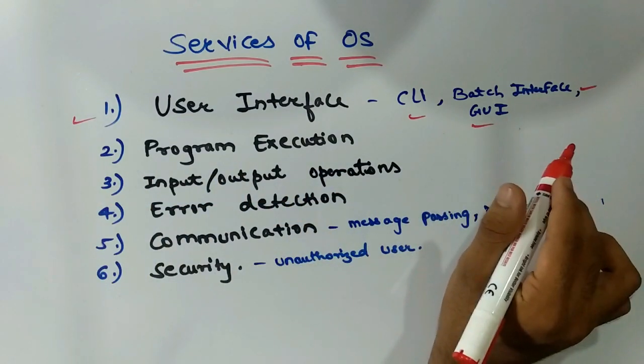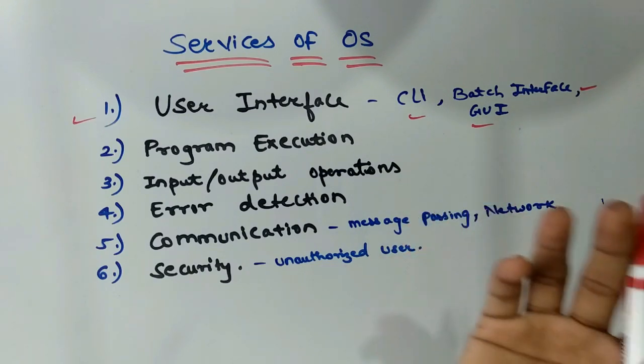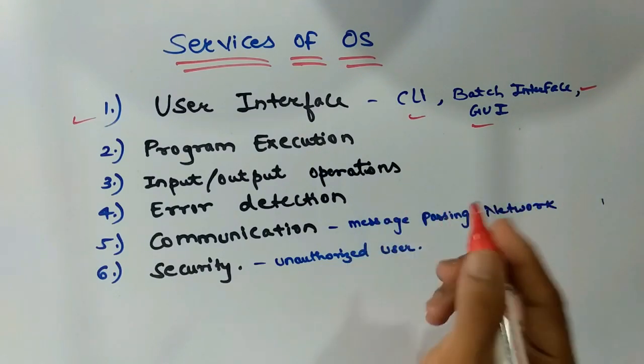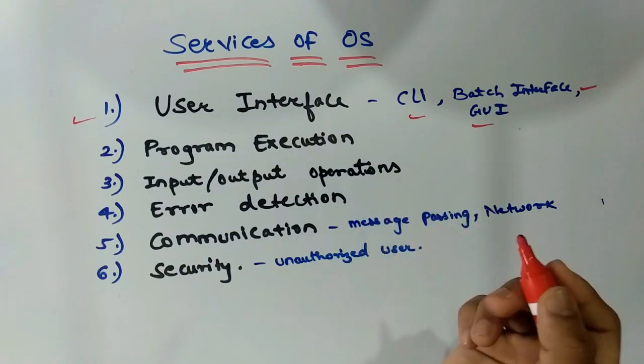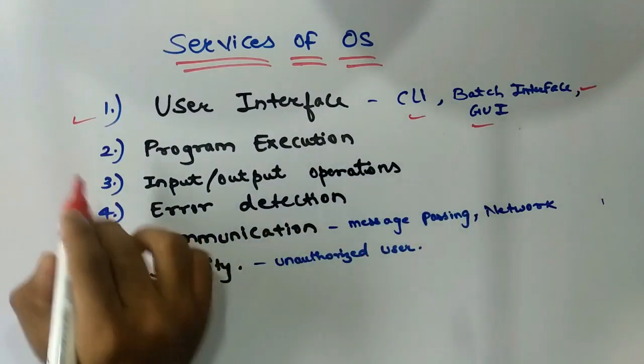GUI, which is graphical user interface. Most operating systems provide graphical interface which have tools like pointing devices which direct the input output operations with the help of graphical control.